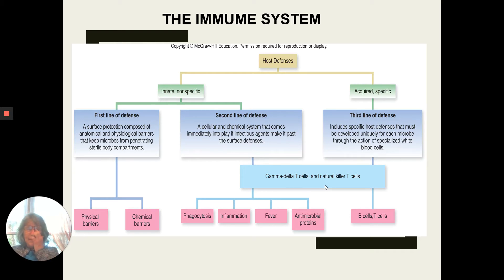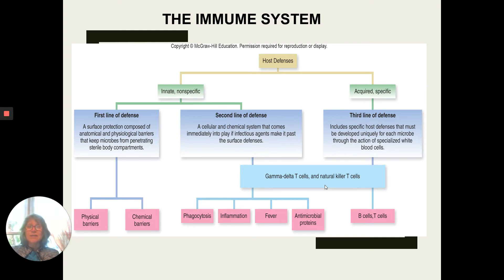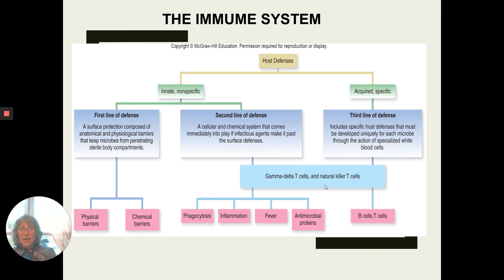Our first line of defense is really about preventing things from getting in. Remember, to cause an infection, a pathogen must first get in, then stay in so it can multiply to a critical mass — to numbers that can cause damage. It must evade host defenses to stay in and then cause some sort of damage.